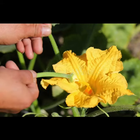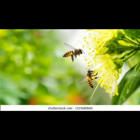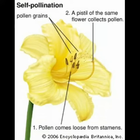If the pollen grains transfer from anther to stigma by artificial, man-made means, that is called artificial pollination. However, in nature there are many ways by which pollen grains reach the stigma of the flower, and that is called natural pollination.